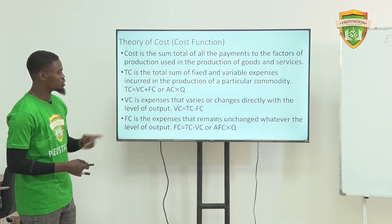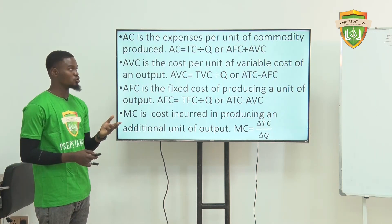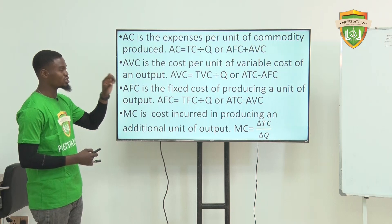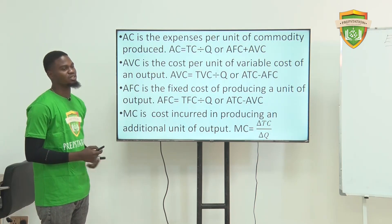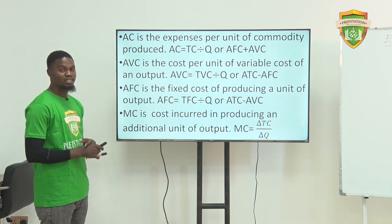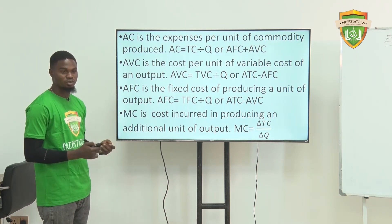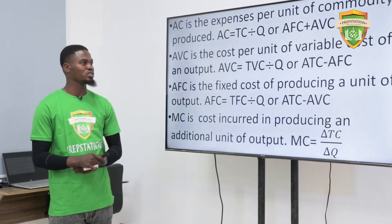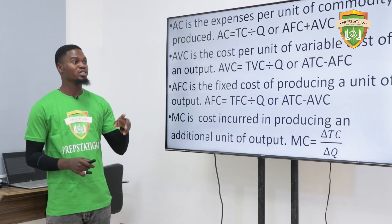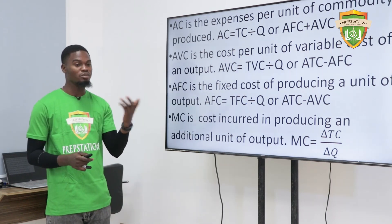When we move forward, we will talk about average fixed cost. Average cost can be sub-divided into two. Average cost has to do with the cost per unit of commodity produced — that is, the cost incurred per one unit of commodity. It can be derived by either dividing your total cost by the quantity of output, or by adding your average fixed cost and your average variable cost. Average variable cost is the cost per unit of variable input, such as labor.